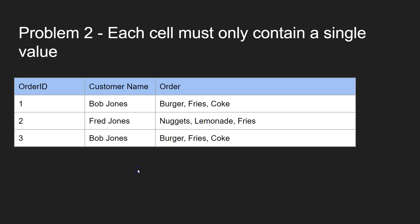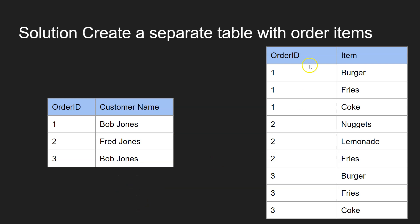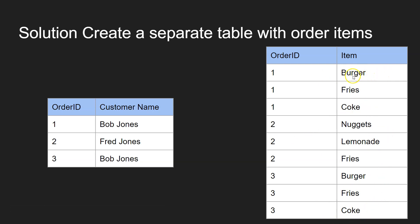Second part: each cell must only contain a single value. As you can see here, this cell doesn't contain a single value — it contains three items: a burger, fries, and Coke. In fact, all of them do. So what we need to do is move those into a separate table so that each row only has one item. This table has an order ID in one column and the item corresponding to that order ID. Order ID 1 has a burger, order ID 1 also has fries, and order ID 1 also has a Coke. Each item in this table is now unique, and there are no multiple values per cell. That's the second bit sorted.